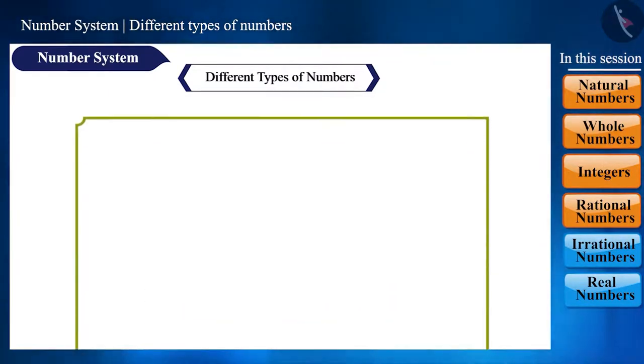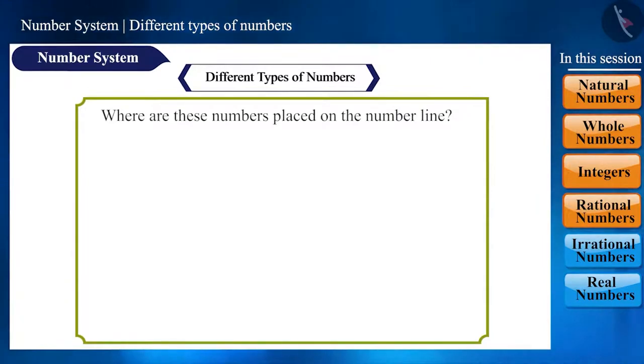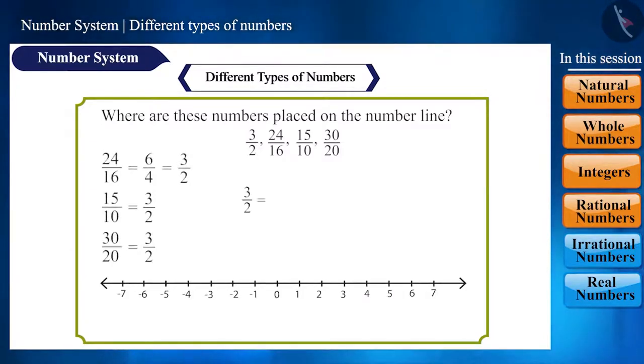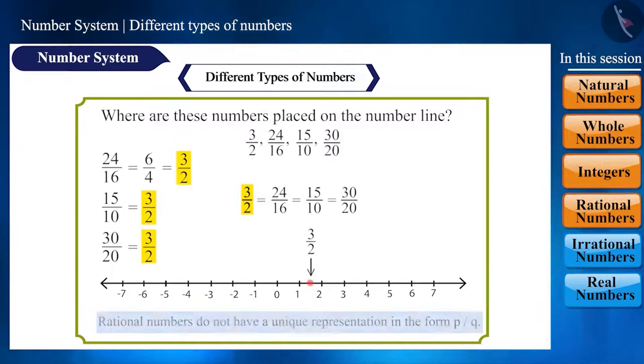Friends, can you tell me, where will all these different numbers 3 by 2, 24 by 16, 15 by 10, 30 by 20 be placed on the number line? Even though these numbers are different, their value remains 3 by 2 which will be located here on the number line. That is, we can say that rational numbers do not have a unique representation in the form p by q.